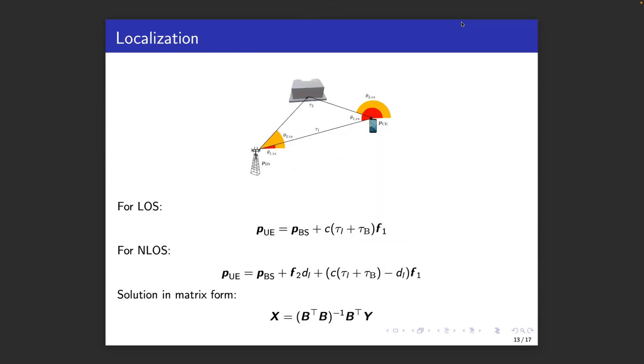After angle of arrival, angle of departure and delay estimation, the localization algorithm is called. We consider a simple method here and also work with several simplifying assumptions. For instance, that the base station and user are synchronized and that the base station and user orientation are null. This allows us to have a closed form expression for the position based on the measurements. Here, F1 and F2 are unit vectors derived from the angles of arrival and angles of departure and the matrices B and Y are provided in the paper.